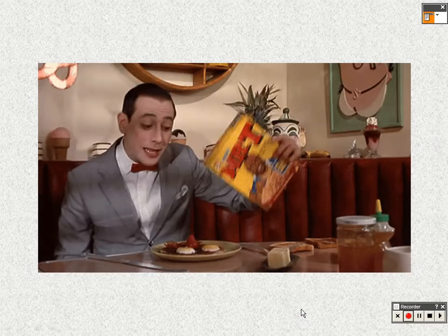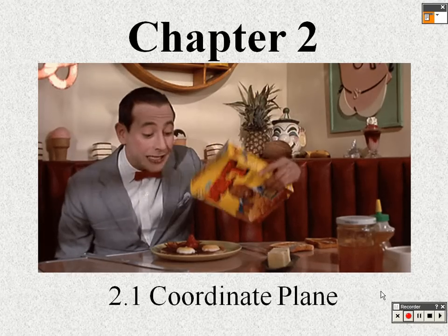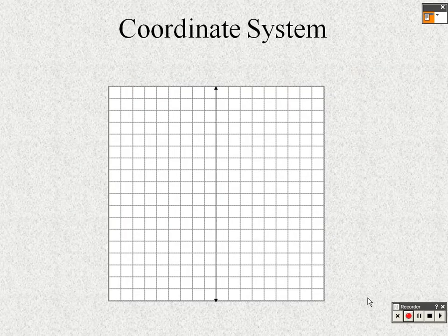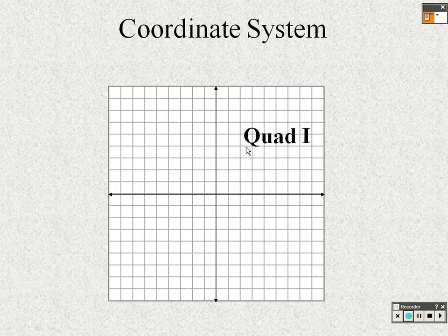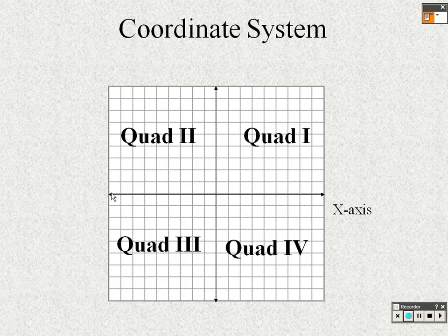We are on section 2.1 in trig, which covers the coordinate plane. You've been working on coordinate systems in algebra for a long time, so most of you should know this. The coordinate plane has four quadrants going counterclockwise: the first quadrant, then quadrant 2, quadrant 3, and quadrant 4.